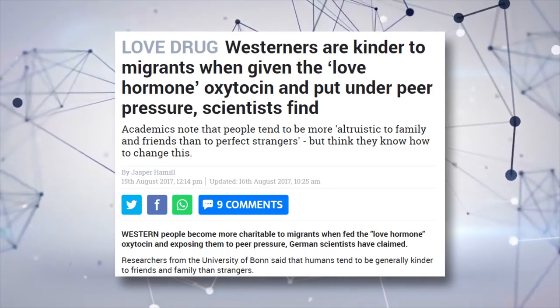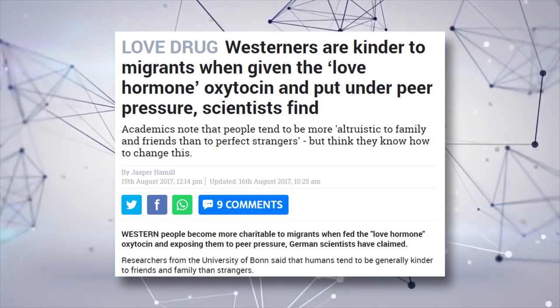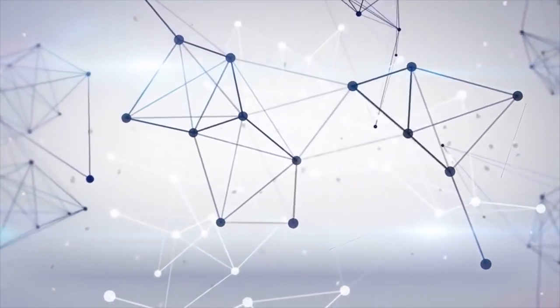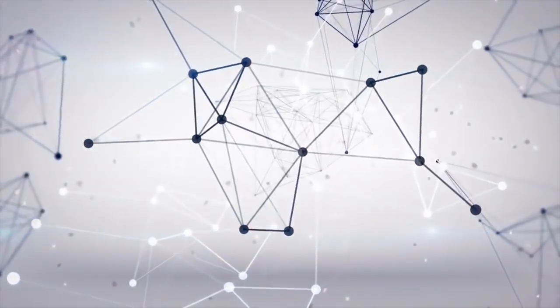Now recall that Germany is experimenting with the oxytocin hormone to make people more accepting of immigrants. Drugging people to make them agree with our political agenda. Suddenly, the crazy anti-vaxxers aren't so crazy after all.